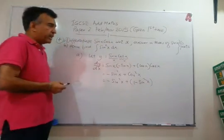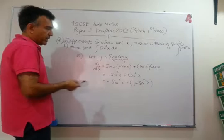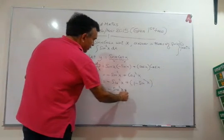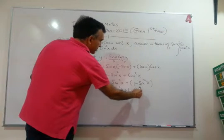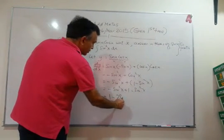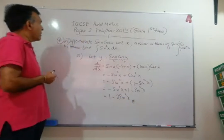We know that sin squared x plus cos squared x is 1. So cos squared x is 1 minus sin squared x. So I have minus sin squared x plus 1 minus sin squared x. I can write my final answer as 1 minus 2 sin squared x. And we are done with part A.